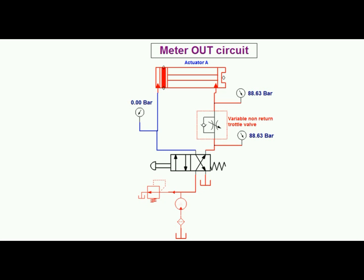One major problem confronting the meter out operation is the intensification of pressure in the circuit which can in turn occur on account of a substantial differential area ratio between the piston and the rods.